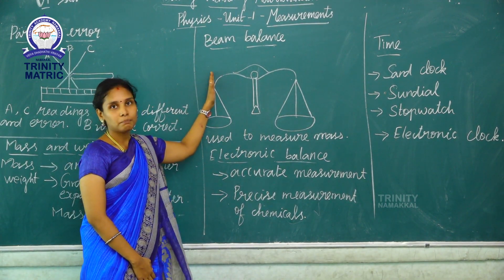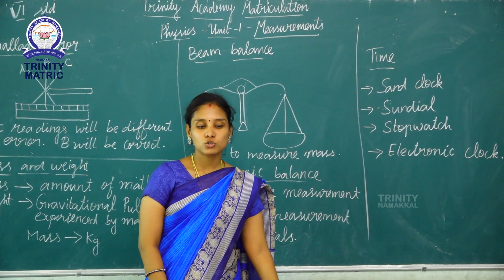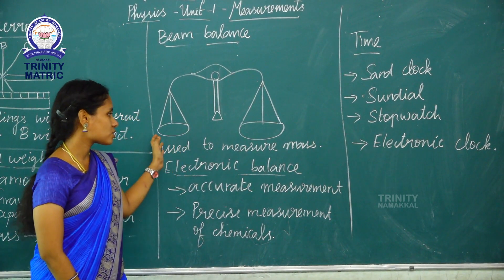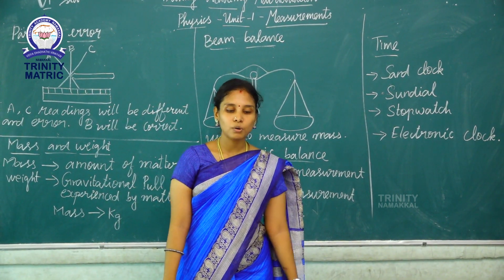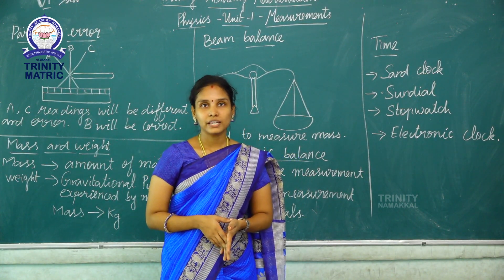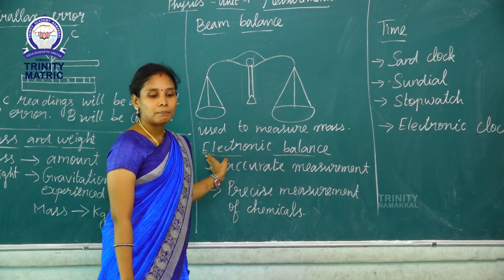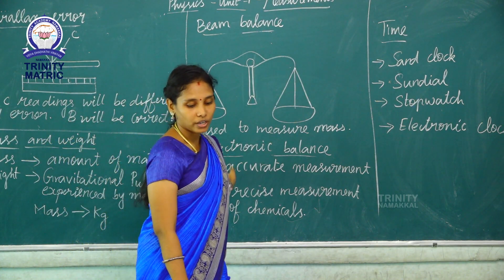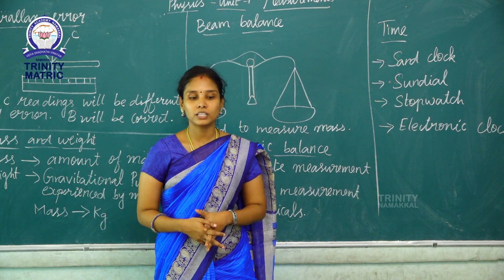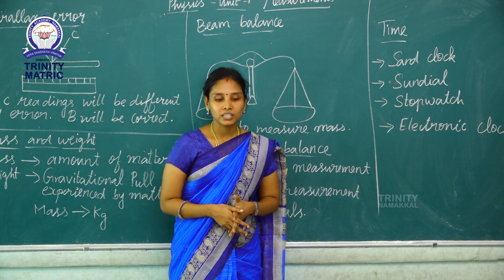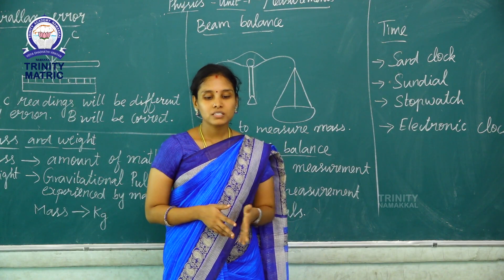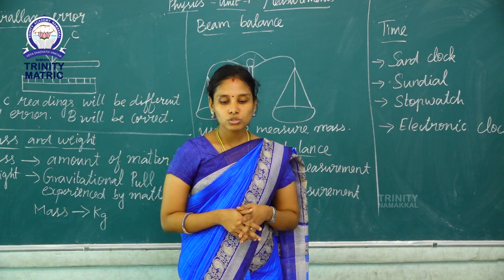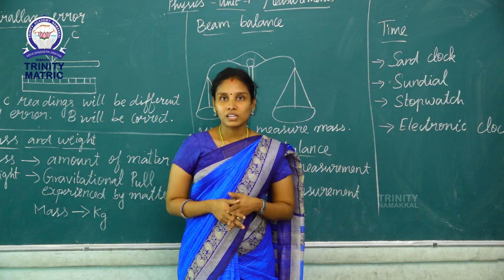Next topic: beam balance. We use a balance to measure the mass of an object. A beam balance works by comparing the mass of an object to that of a known mass. Next, electronic balance. It is used to measure the accurate measurement of an object's weight. Electronic balance is a device used to find the accurate weight measurement. It is used very commonly in laboratories for weighing chemicals to ensure precise measurement. Electronic balance may also be used with food, grocery items, and jewelry.